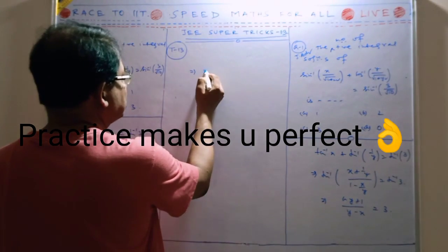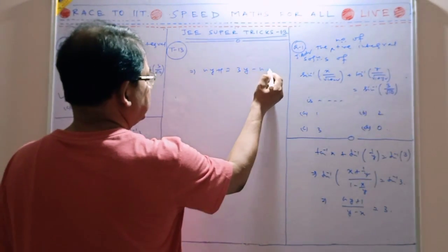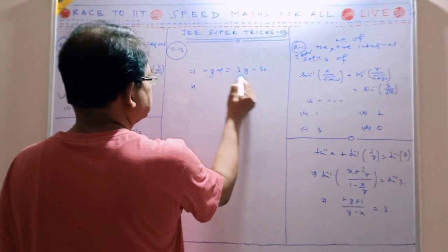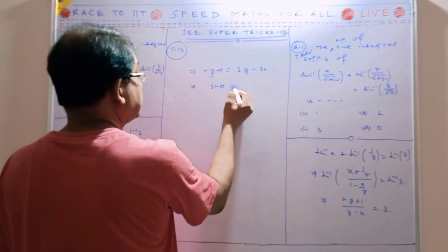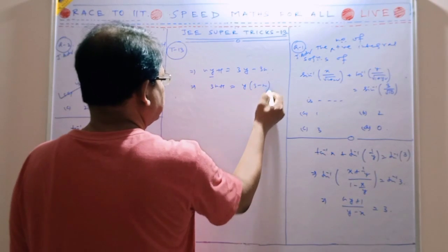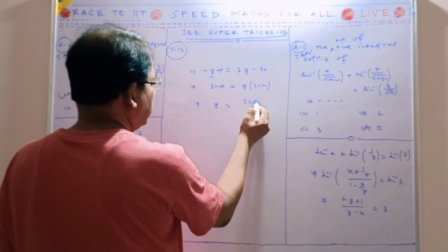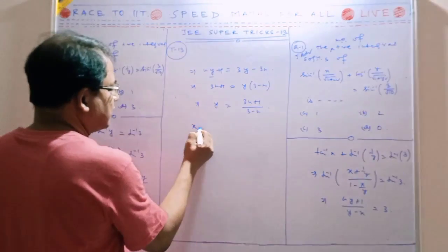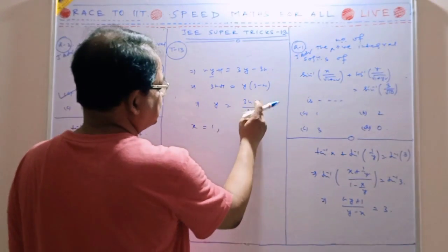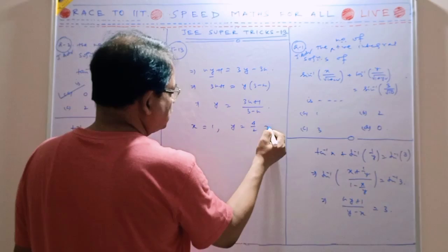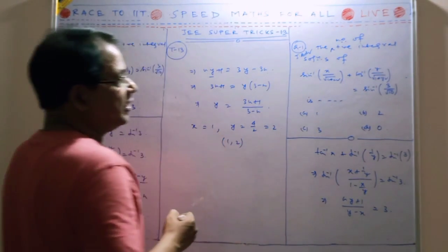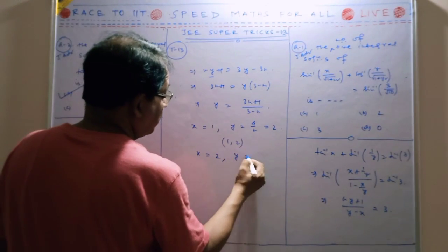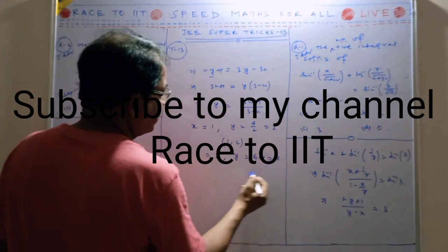So xy plus 1 equals 3y minus 3x. Look, move 3x to this side: 3x plus 1. So y's value is what? Y equals (3x plus 1) divided by (x minus 3). Actually, y equals (3 plus x) divided by (3 minus x).